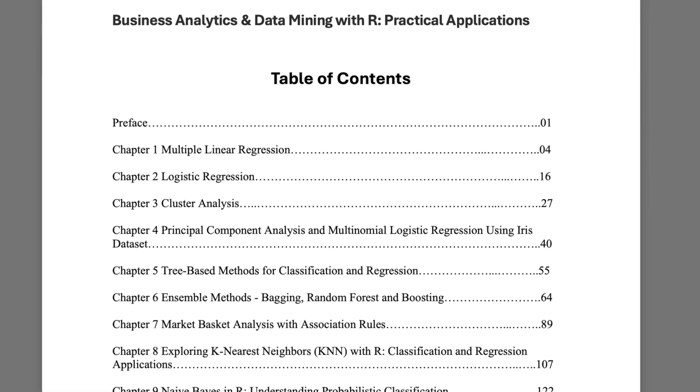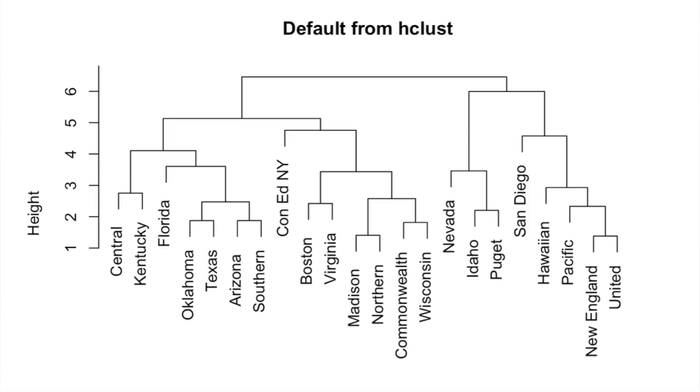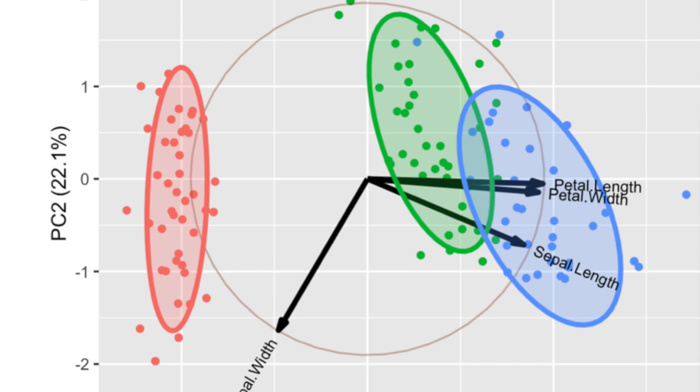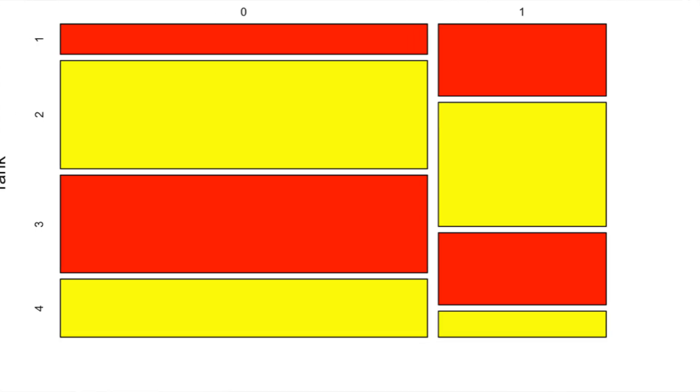The book has nine chapters, starting with the application of multiple linear regression, moving on to logistic regression, then unsupervised learning methods such as cluster analysis and principal component analysis, and then decision trees. It also covers ensemble methods such as bagging, random forest, and extreme gradient boosting, as well as the application of market basket analysis using association rules, K-nearest neighbor methodology, and finally in chapter nine, an application of naive Bayes methodology.